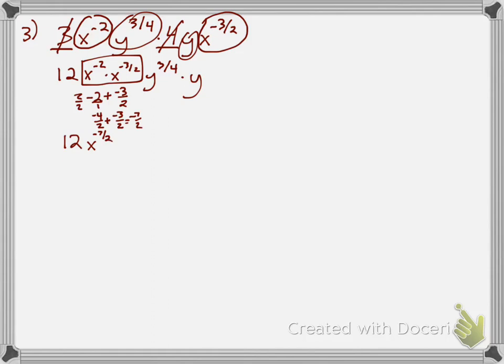If you need to, you can use your calculator to add negative 2 plus negative three-halves using the alpha y-equals button to get that exponent — that's fine with me. For the y's, I have to add three-fourths plus 1. Getting a common denominator, 1 becomes four-fourths, so three-fourths plus four-fourths is seven-fourths. Again, you can use your calculator to get seven-fourths if needed. So I have y to the seven-fourths.